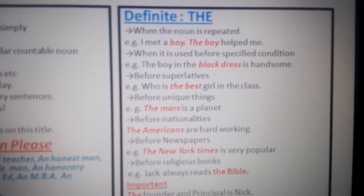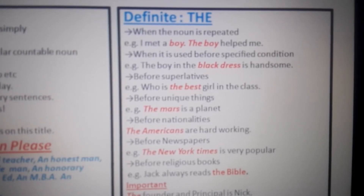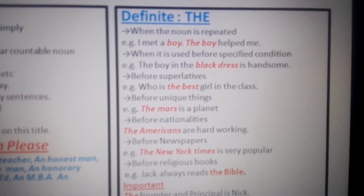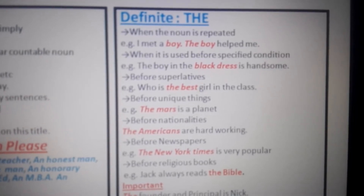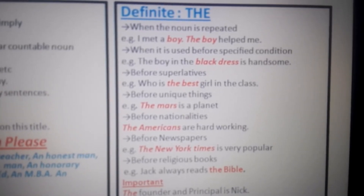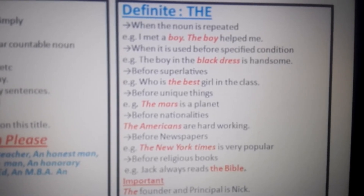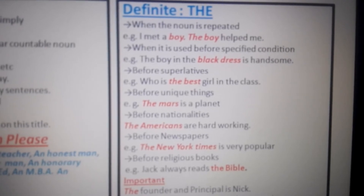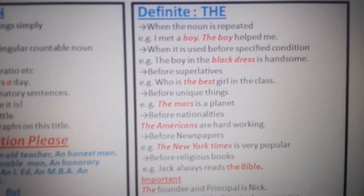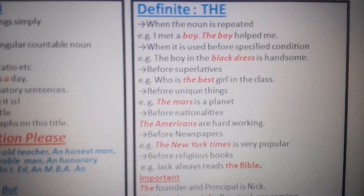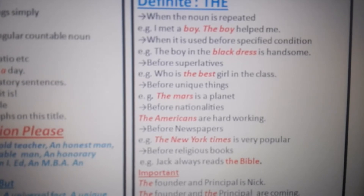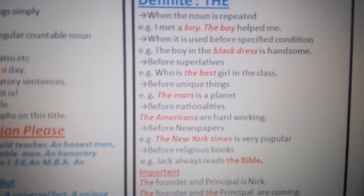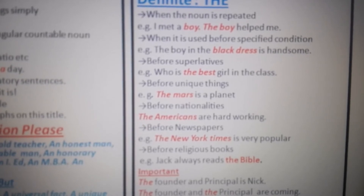Before superlatives, we use 'the'. For example, 'Who is the best girl in the class?' — 'best' is a superlative, the third form of the adjective, that's why 'the' is used before 'best'. Before unique things: 'The Mars is a planet' — 'Mars' is only one planet in the world, that's why 'the' is used in such context.